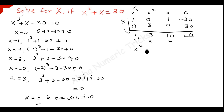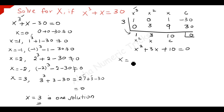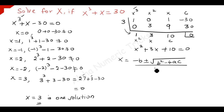So the cubic equation is reduced to the quadratic equation x squared plus 3x plus 10 equals 0, because we got one solution x equal to 3. After that, we can't factorize because of the values 3 and 10. So we have to use the quadratic formula: x equals minus b plus or minus square root of b squared minus 4ac, divided by 2a. Here a equals 1, b equals 3, c equals 10.